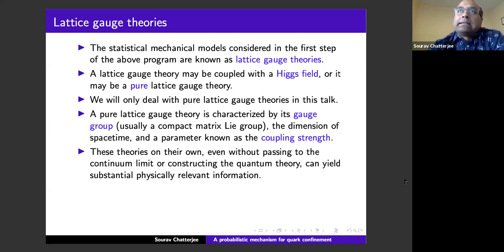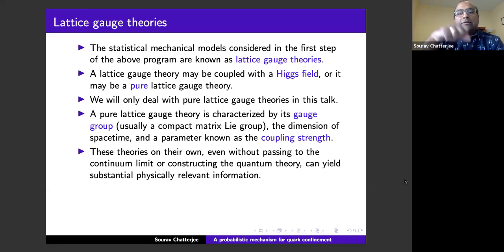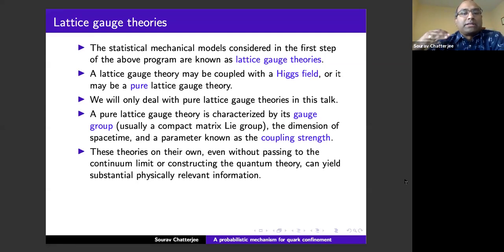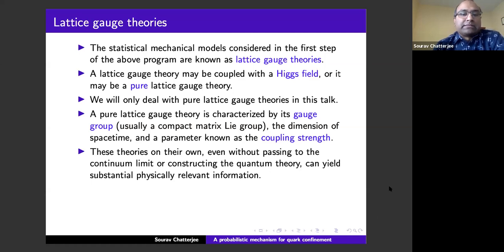Theoretical physics around quantum field theory is mainly about perturbative calculations — the whole machinery of Feynman diagrams, where you start with something Gaussian, add a non-Gaussian component with a small parameter, and expand. But there are many things which are beyond perturbation theory; you really have to understand the full expansion to get a hold of them. The only way to study these things currently is using lattice gauge theories and numerical simulations.